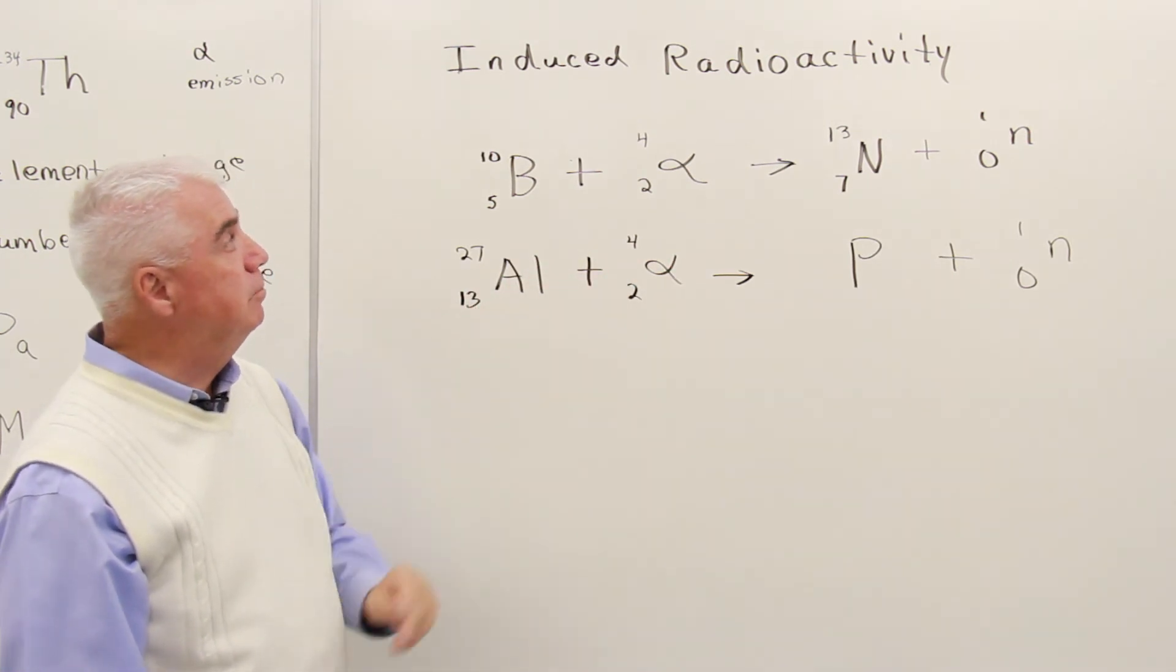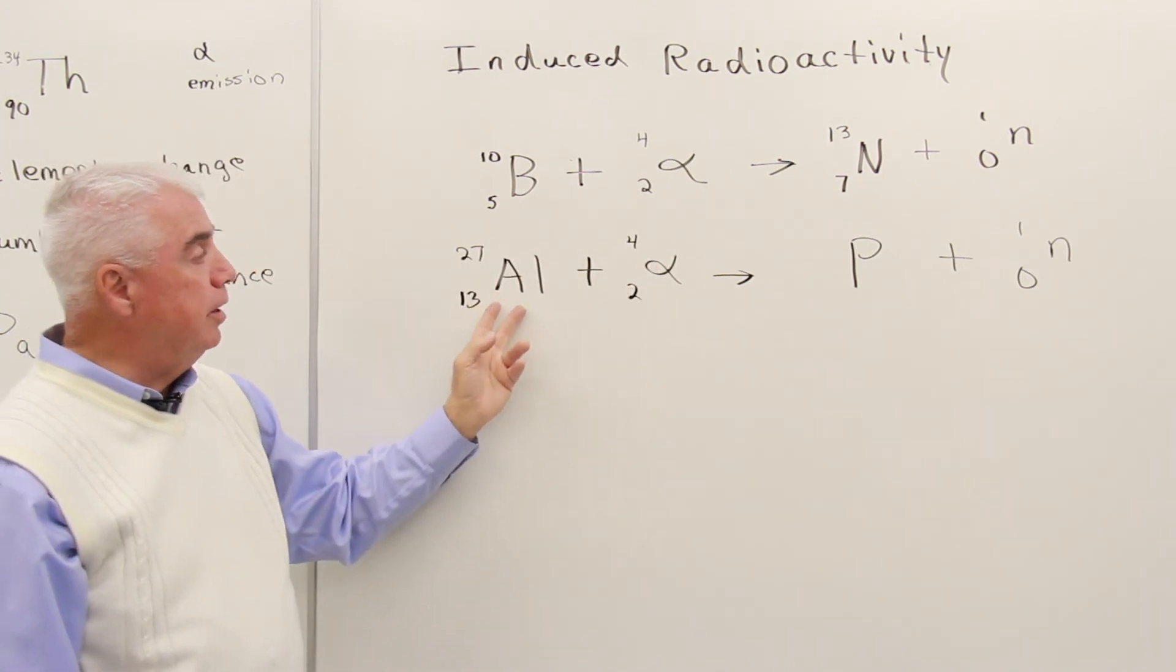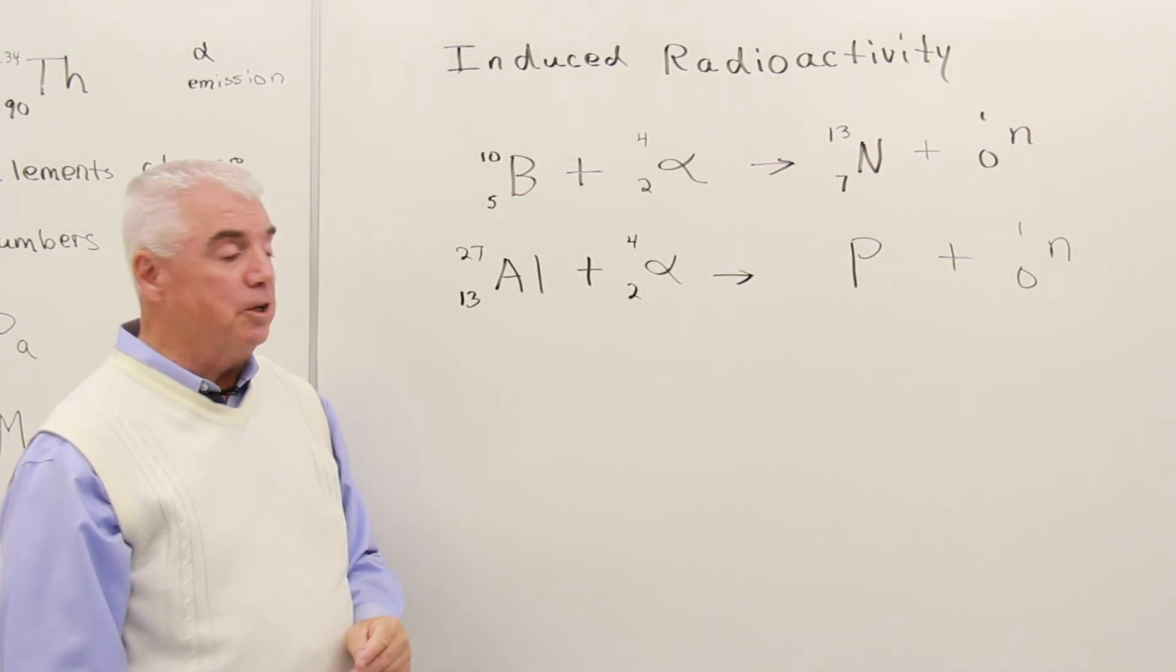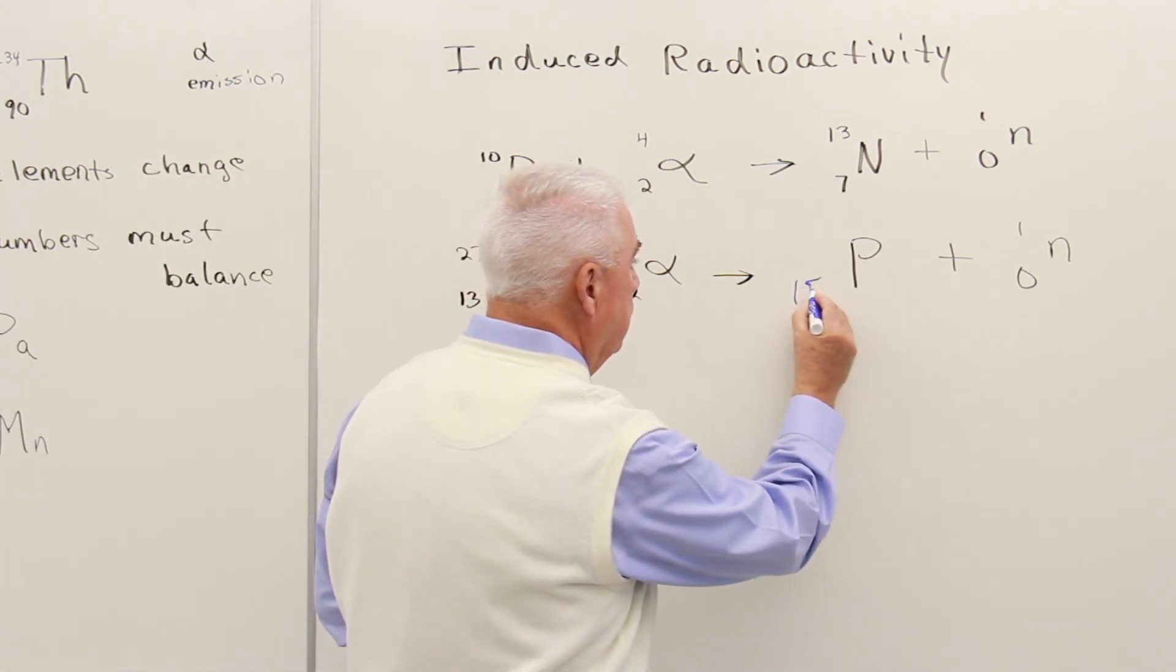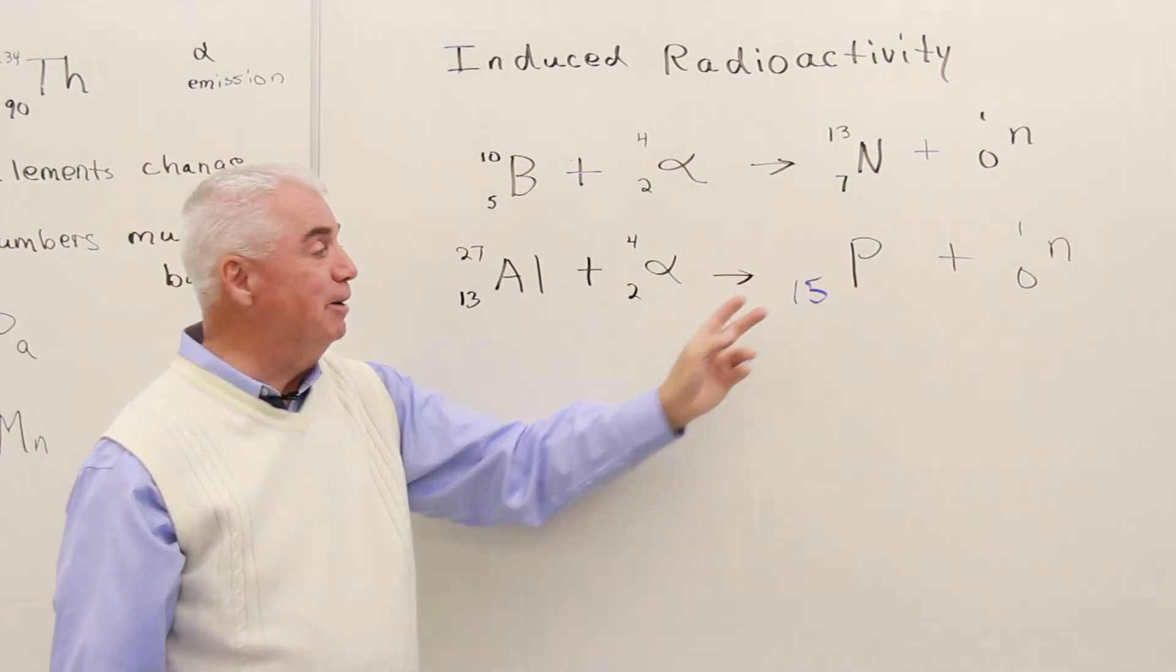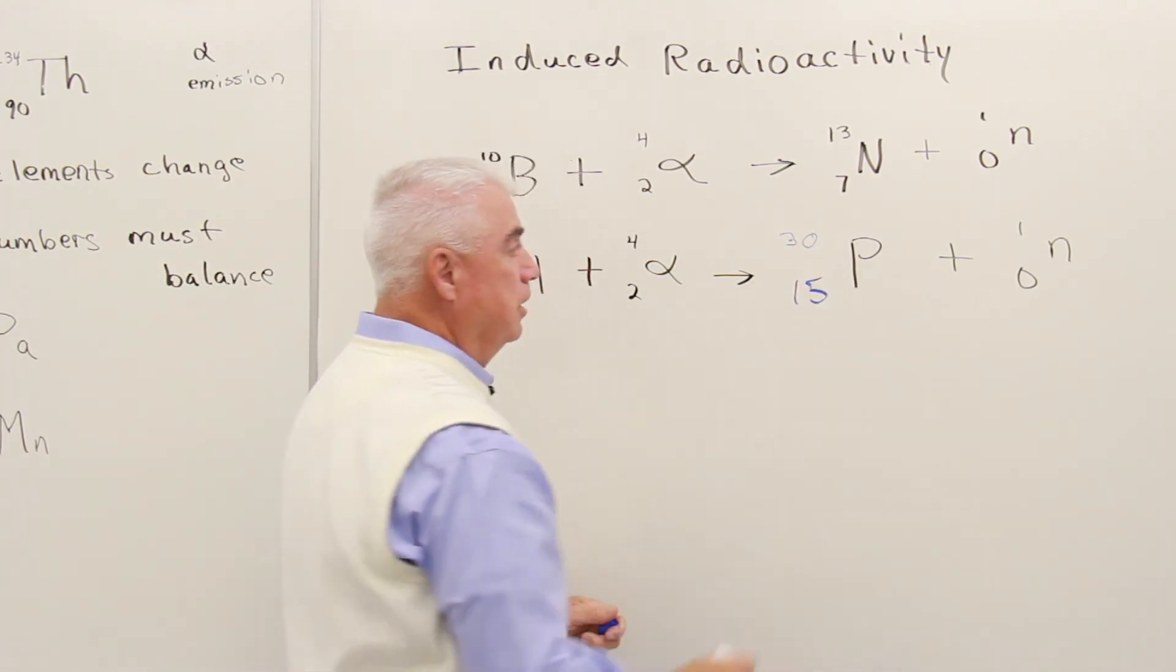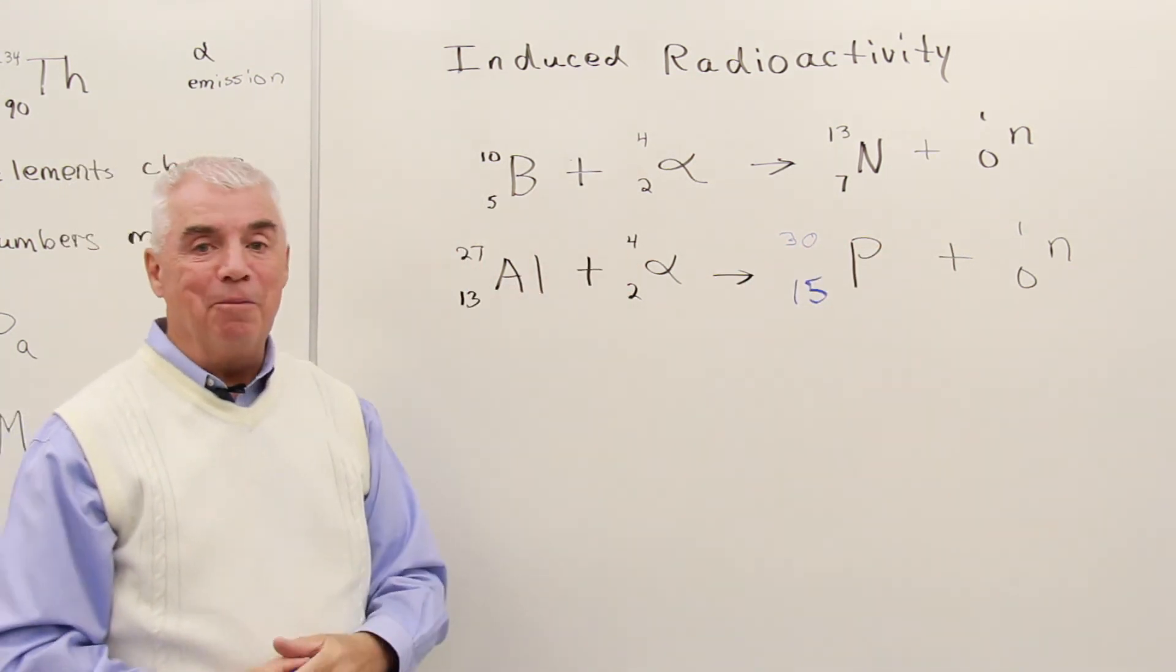Here's another example of an induced radioactive process. I think this was carried out by Madame Curie. Starting with an aluminum isotope, ending up with phosphorus, giving off a neutron. Let's see if we can figure out what phosphorus isotope it is. 13 and 2. Well, this lowercase number must be 15. And hopefully, if we look on the periodic table chart, phosphorus is element 15. The uppercase numbers total to 31 on the left. Here, this must be phosphorus 30. So that 30 plus 1 gives us the same number that we have on the left.